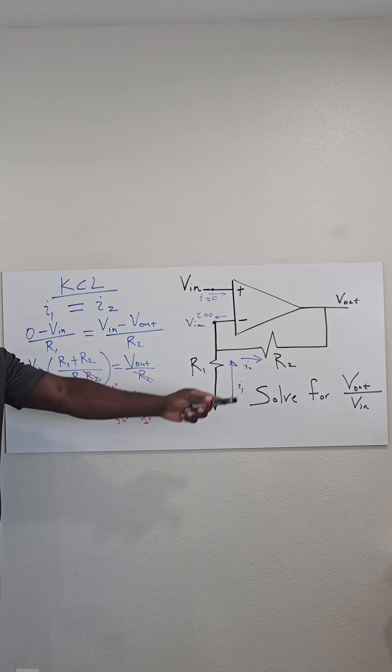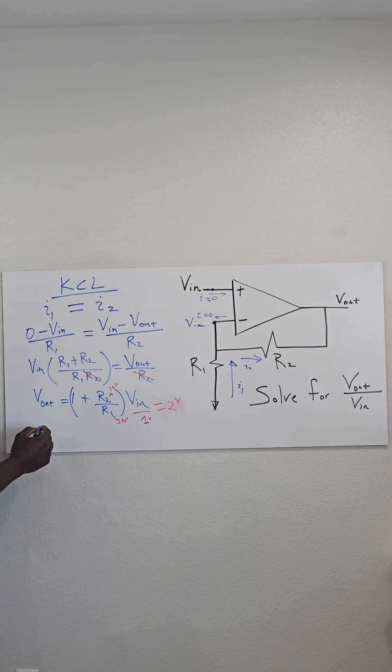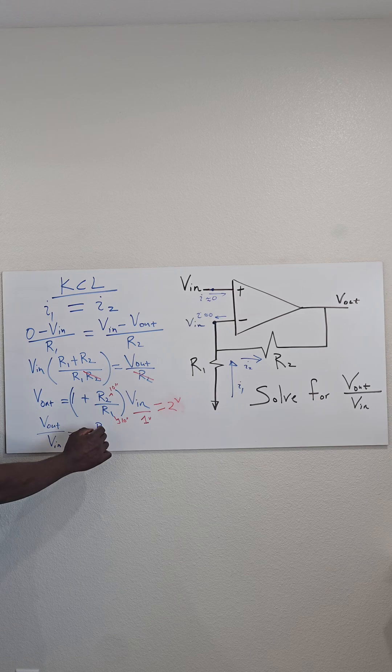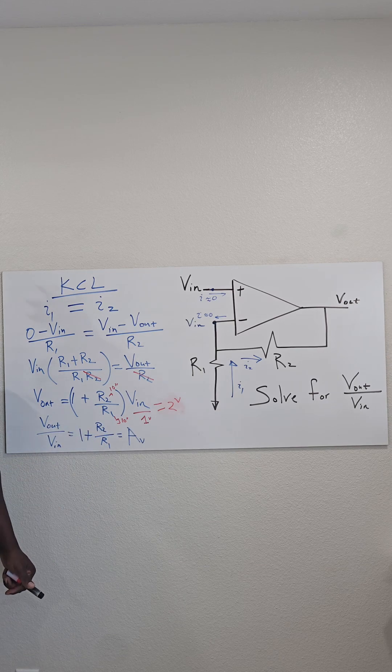Again, in order to get Vout over Vin, you just do Vout over Vin is simply equals to 1 plus R2 over R1. Thank you.